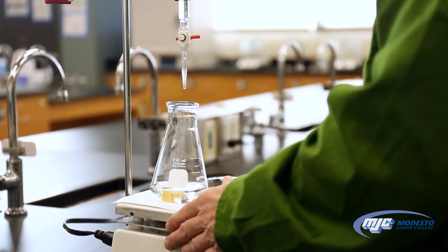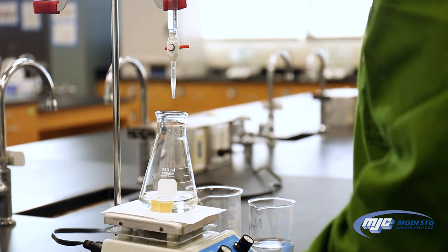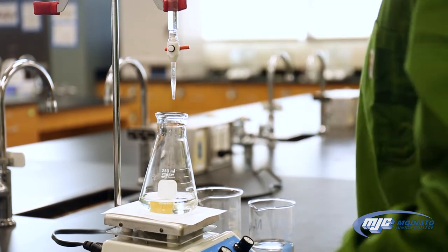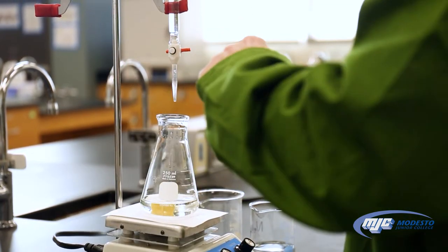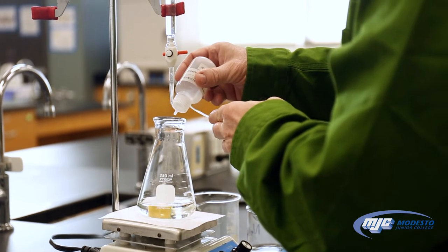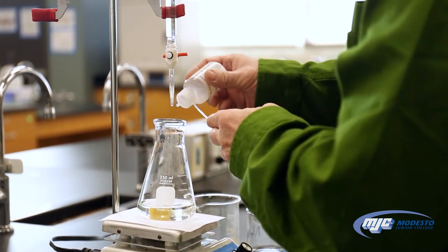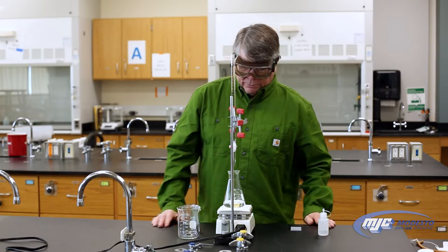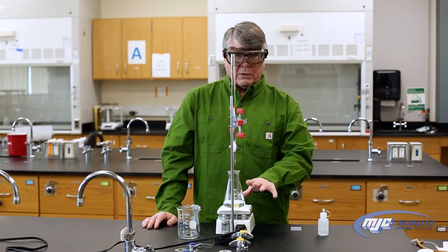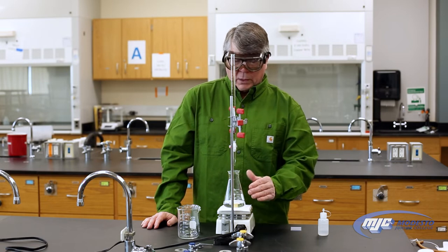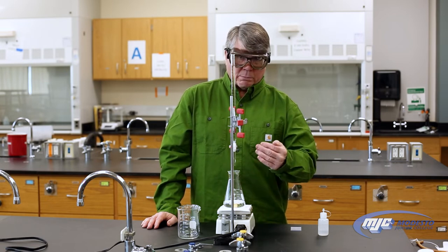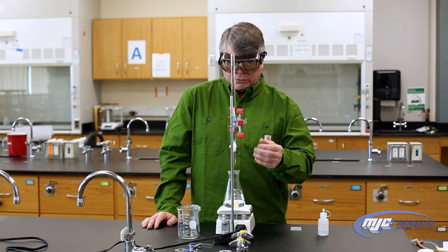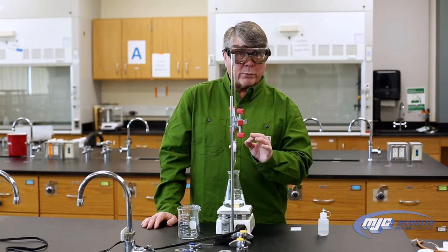I read my initial volume. I'm going to turn on my stir plate so we have it spinning. And I'm going to add my indicator, phenolphthalein. We have a few drops, three or four, maybe five. Now with phenolphthalein, it looks clear when it's in an acidic solution, looks just like water. When it turns basic, pH of about seven or so, it'll turn a light red color. That's what we're looking for.